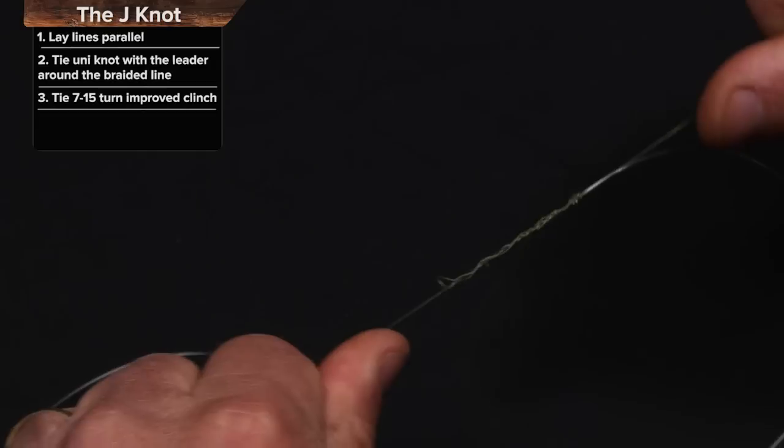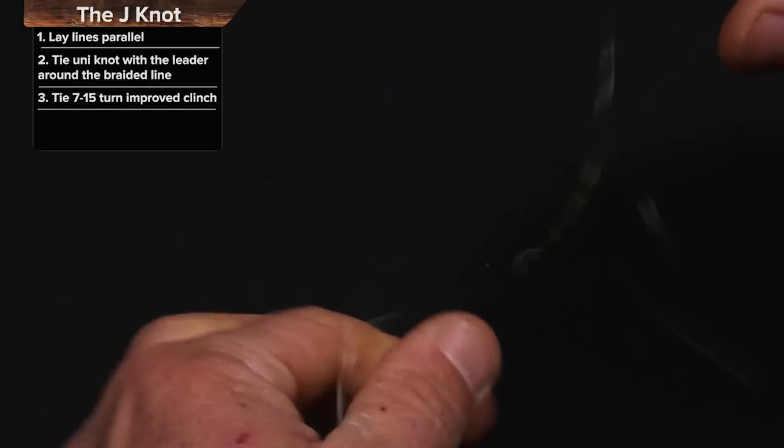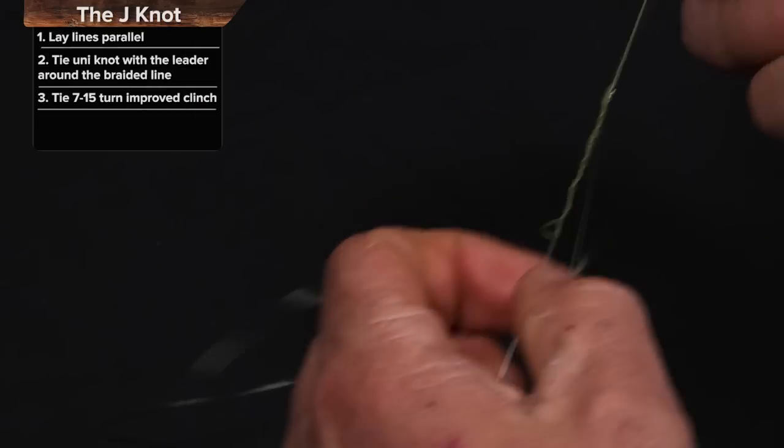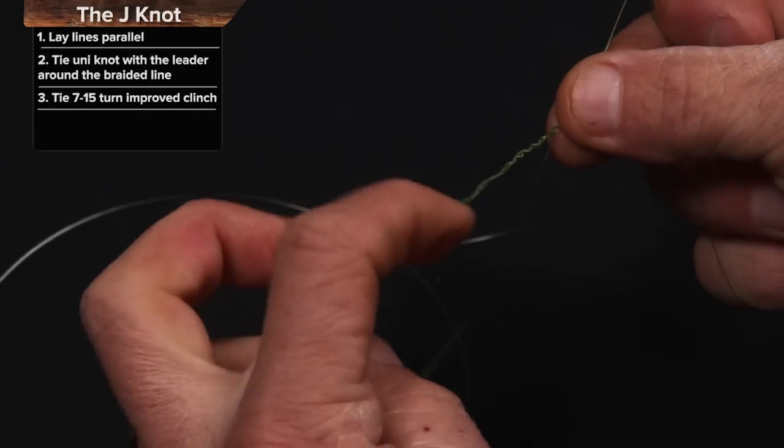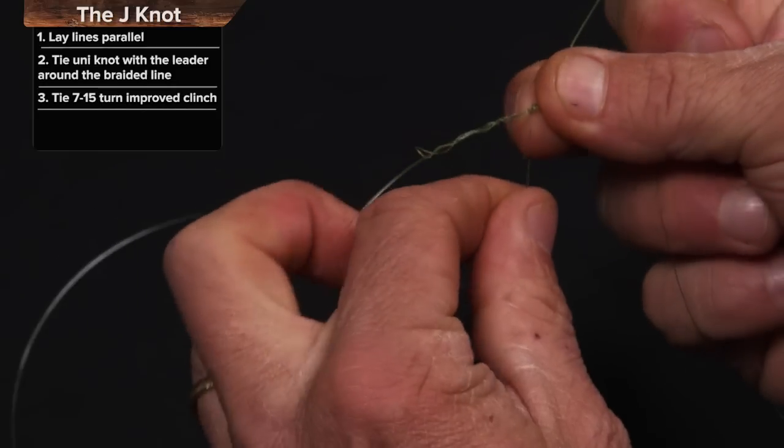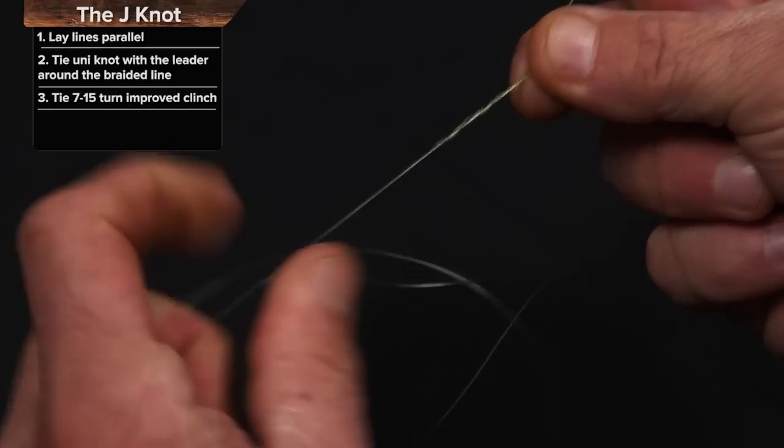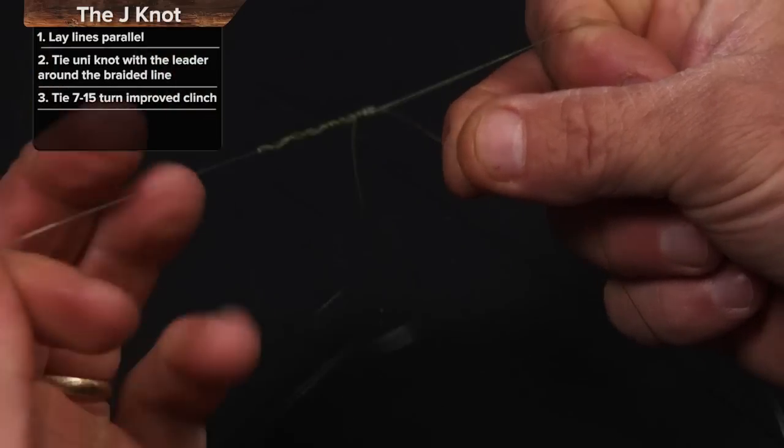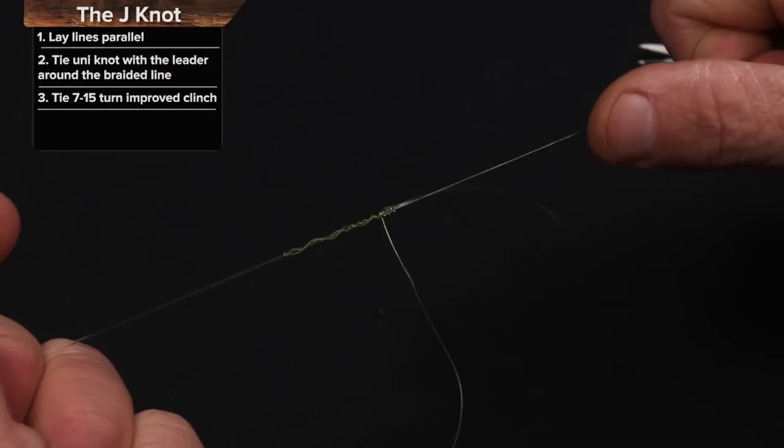Sometimes you have to kind of jiggle it to get it to start coming down. And then as it starts to tighten up, if there's big gaps here, I'll pull on the tag end a little bit, straighten that knot out. Now when I pull it down,